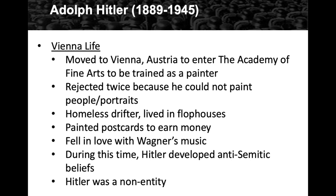What difference it might have made if he had been accepted — would he have had a different direction in life and not become the leader of Germany? He was a homeless drifter in Vienna, lived in flophouses — men's dormitories for the homeless — and painted postcards to earn a meager living. During this time he fell in love with Wagner's music at outdoor or cheap concerts. He also developed anti-Semitic beliefs; Vienna was very anti-Semitic, with street preachers handing out pamphlets, which Hitler read.